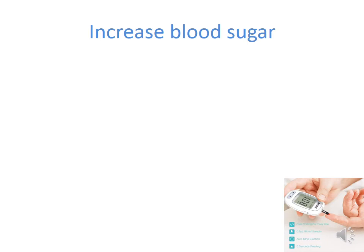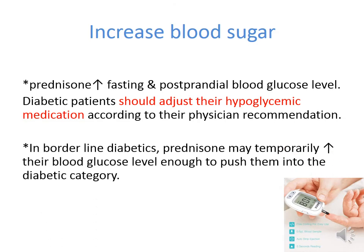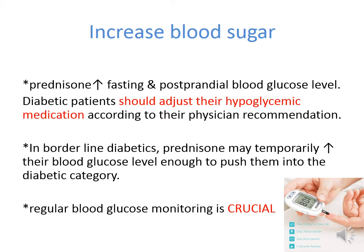One major problem associated with corticosteroid administration is increased blood sugar. Prednisone increases fasting and postprandial blood glucose levels in diabetic patients, who should adjust their hyperglycemic medication according to their physician's recommendation. In borderline or pre-diabetic patients, prednisone may temporarily push blood glucose into the diabetic range, requiring medication. Therefore, regular blood glucose monitoring is crucial while on corticosteroids.